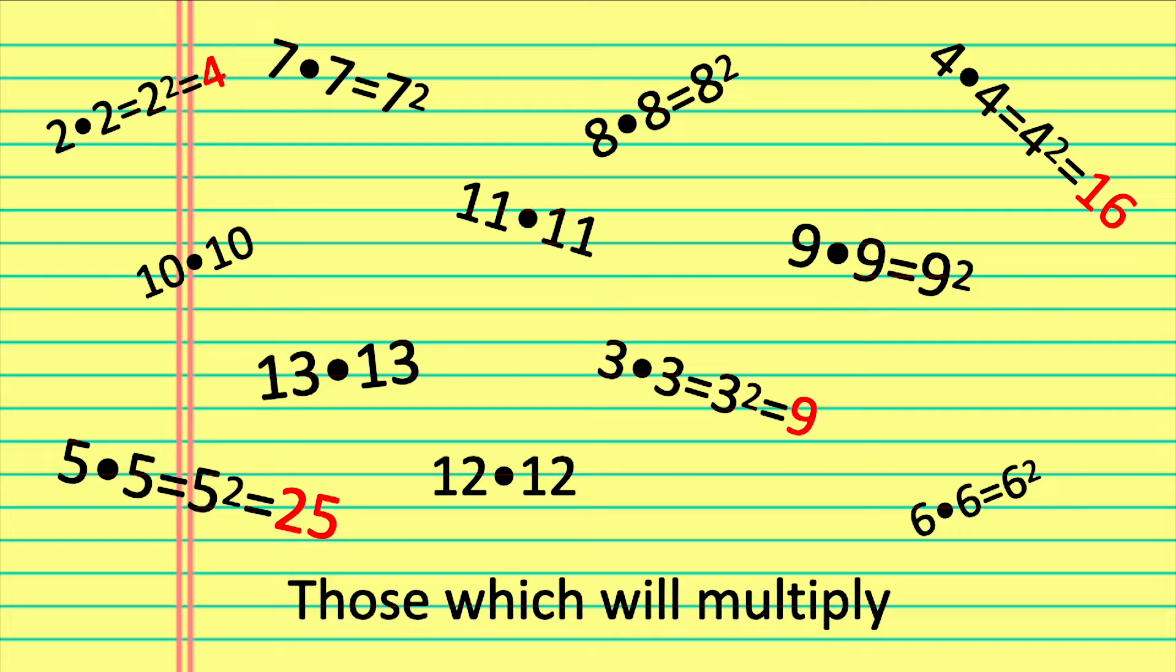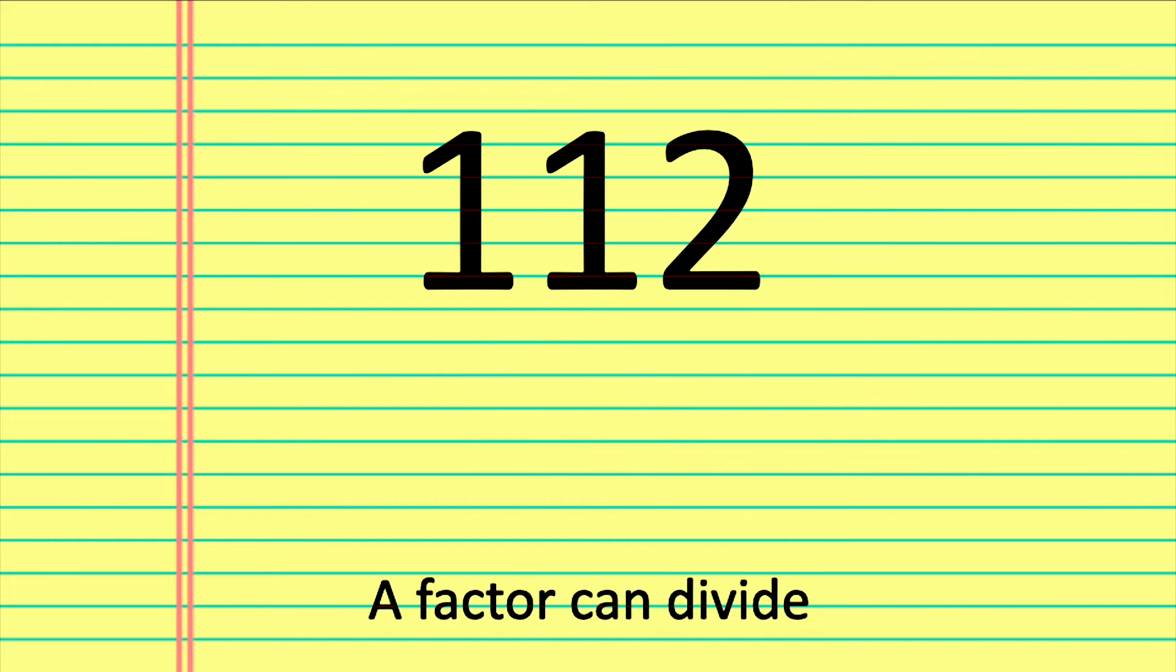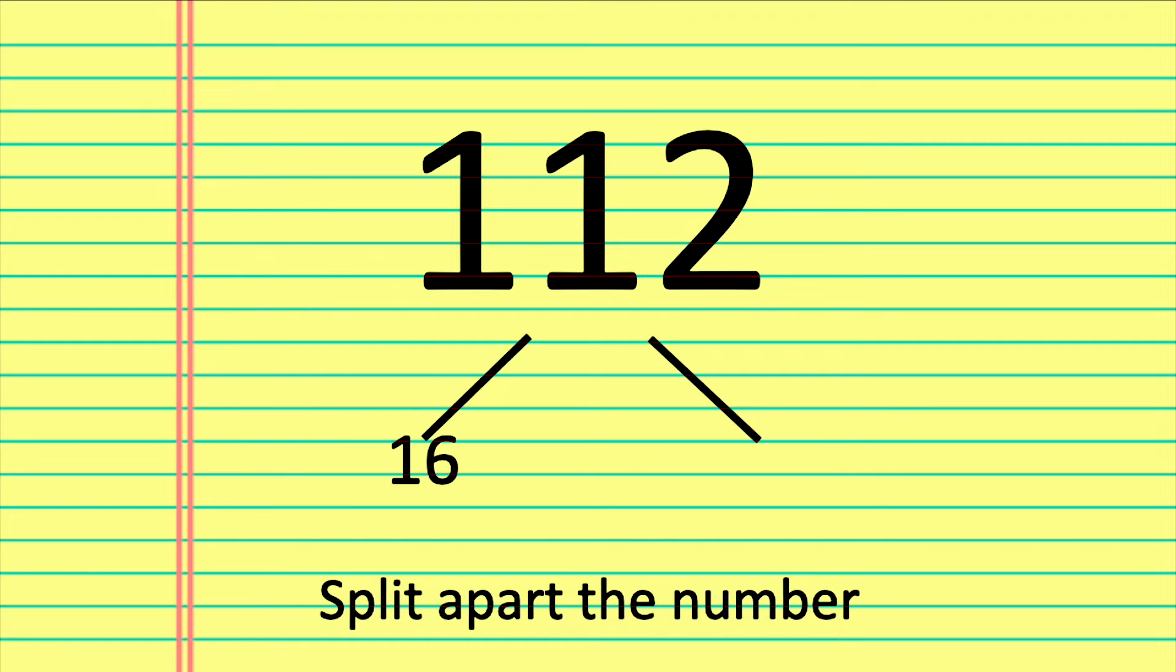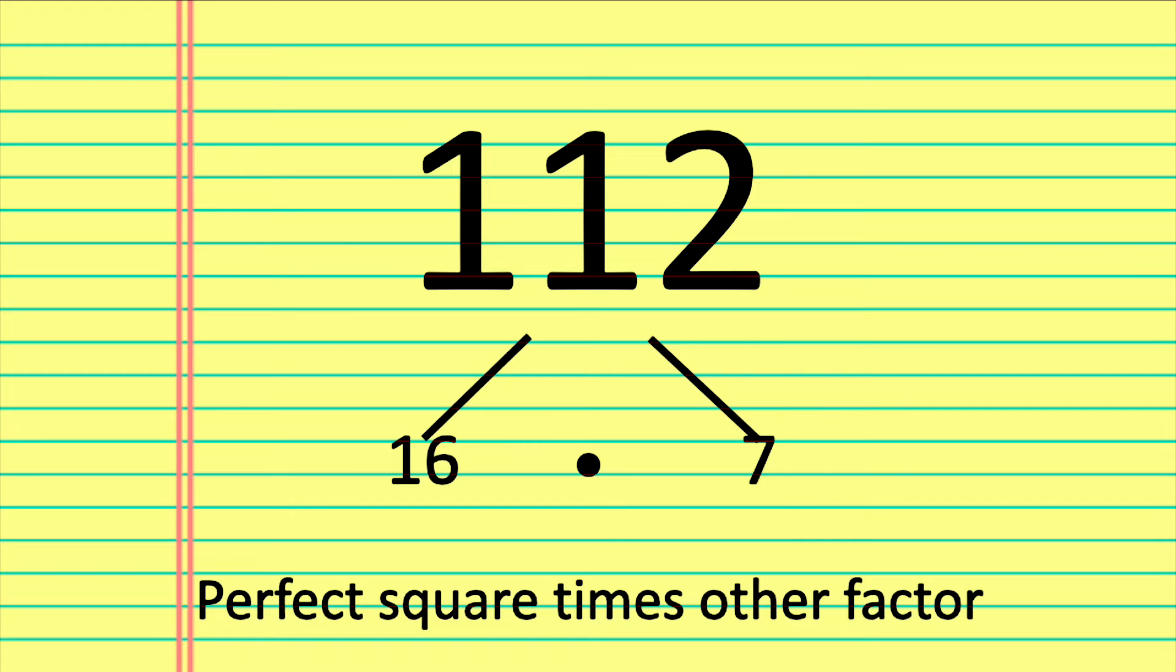Those will multiply if a perfect square is a factor and can divide into the number evenly, then it can simplify. Split around the number to the product of two roots. Perfect square times other factor replaces.